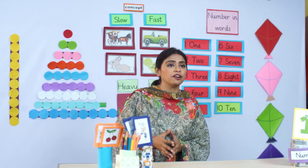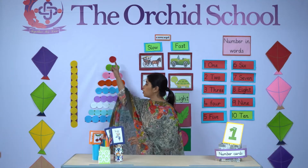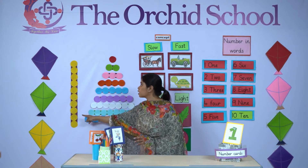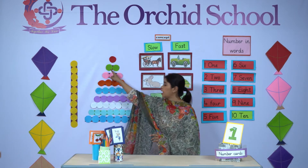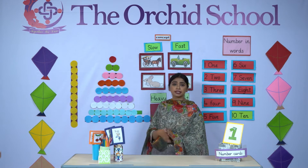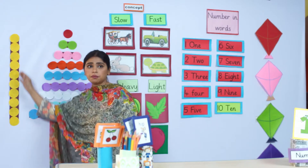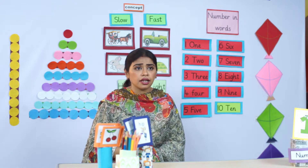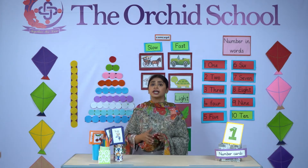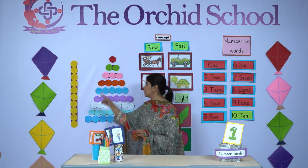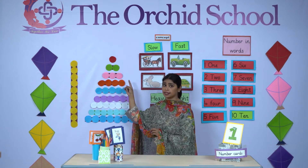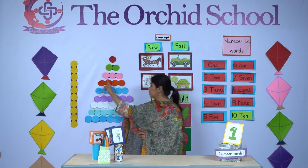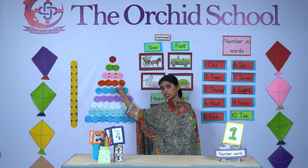This is a bar of ten and one makes eleven. A bar of ten and two makes twelve. This is a bar of ten and you don't need to count them again and again. For example, now we are on thirteen — so a bar of ten, eleven, twelve, thirteen.